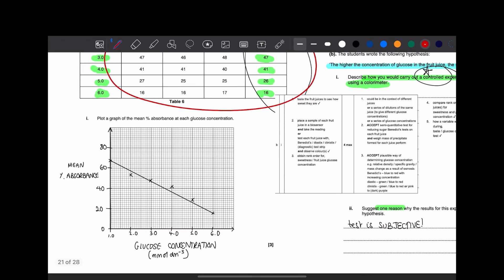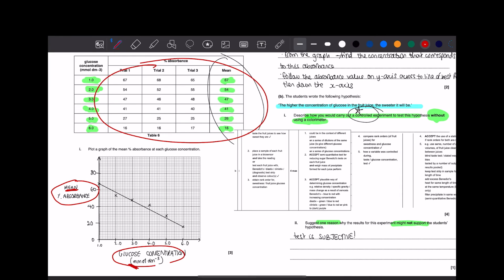Essentially, on the y-axis, mean percentage of absorbance. If you didn't write mean here, you wouldn't get the mark, so that's how important it is. As for the x-axis, we've got glucose concentration, and you must include units when there are units present. Then you just try and plot them.